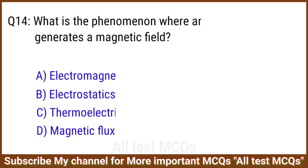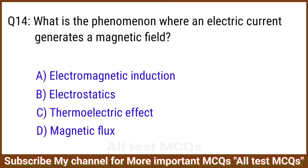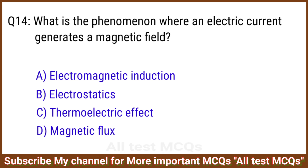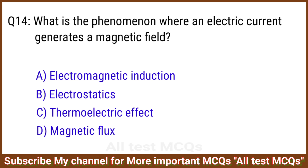Q14. What is the phenomenon wherein electric current generates a magnetic field? The right answer is option A: Electromagnetic induction.